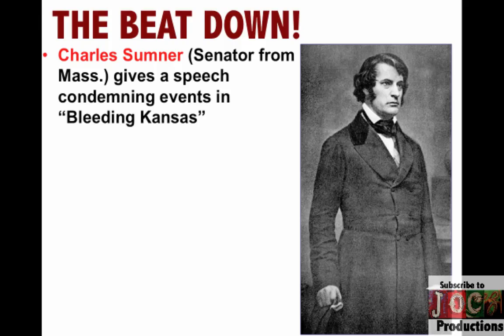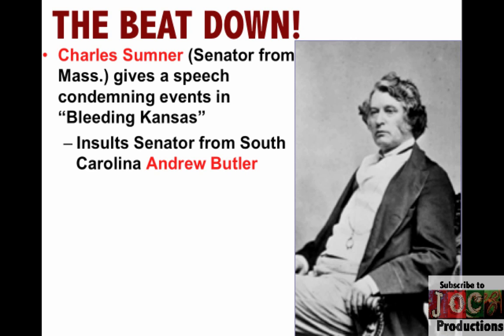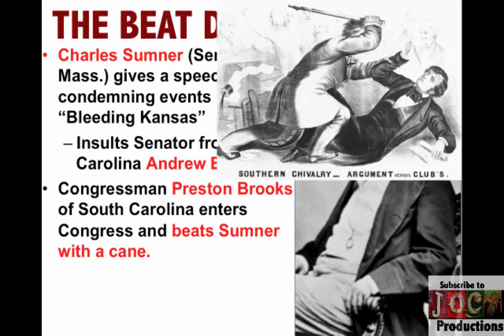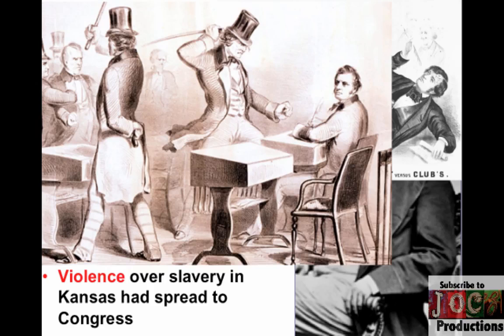And this fighting spreads to Congress — the beatdown. Charles Sumner, an abolitionist senator from Massachusetts, gives a speech in Congress entitled 'The Crimes Against Kansas,' basically condemning the events going on in Bleeding Kansas. During his speech, he also insults a Southern senator named Andrew Butler. Southerners are outraged — not just for his anti-slavery speech, but also because he personally insulted Butler. A couple days later, Congressman Preston Brooks of South Carolina enters the chambers of Congress and beats Charles Sumner with a cane over his head until it broke. Sumner was so badly injured he could not return to the Senate for many years. The violence over slavery in Kansas had now spread to the halls of Congress.